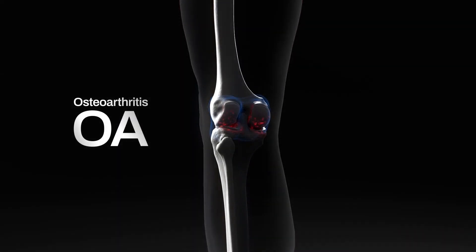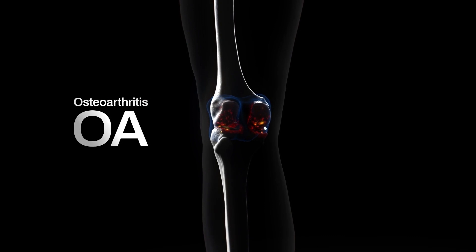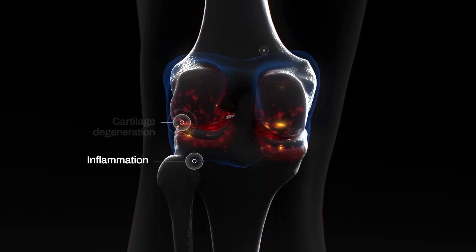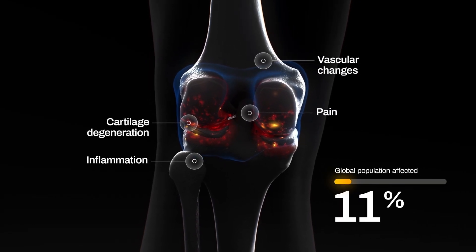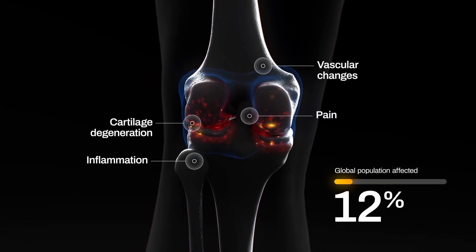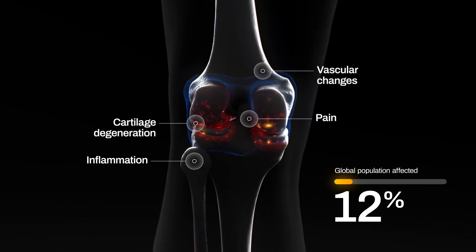Osteoarthritis, or OA, is a disease of the whole joint, leading to and perpetuating inflammation, cartilage degeneration, vascular changes, and pain. OA affects more than 12% of people in the developed world, and for many there is no effective treatment.